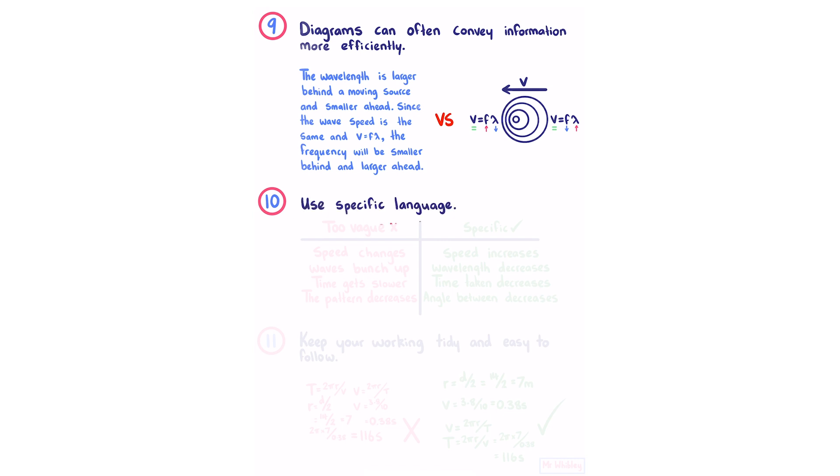Number 10, use specific language. Here are a few examples. Instead of speed changes, state specifically that it increases or decreases. Instead of waves bunch up, the wavelength decreases. Instead of time gets slower, which doesn't make technical sense, the time taken decreases. Instead of the pattern decreases, the angle between decreases.